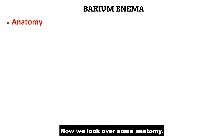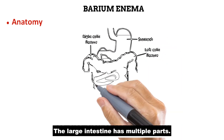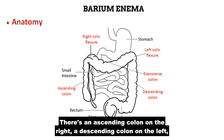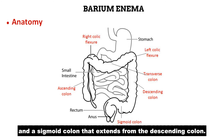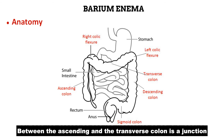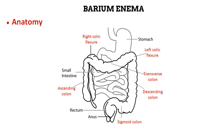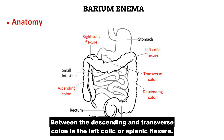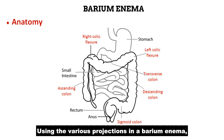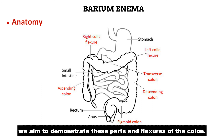Now we look over some anatomy. The large intestine has multiple parts. There is an ascending colon on the right, a descending colon on the left, a transverse colon between the ascending and descending colon, and a sigmoid colon that extends from the descending colon. Between the ascending and transverse colon is a junction known as the right colic or splenic flexure. Using the various projections in the barium enema, we aim to demonstrate these parts and flexures of the colon.